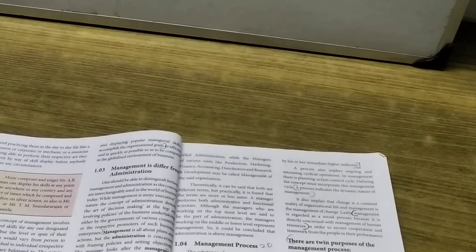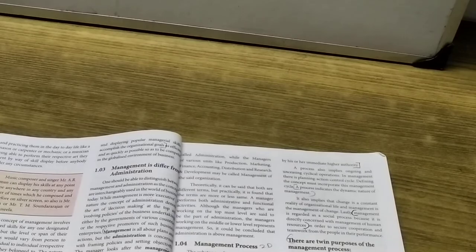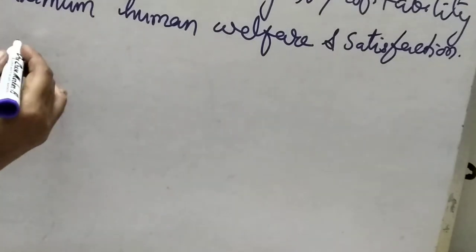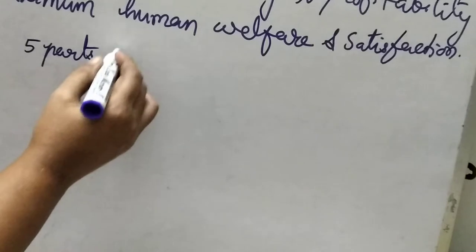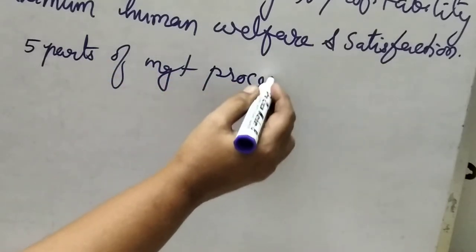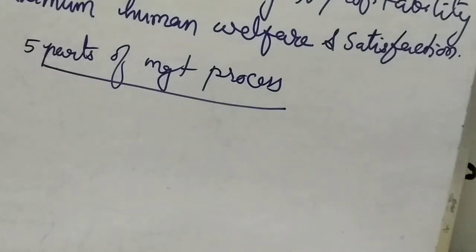Now you can see there are five parts of the management process. Five parts. Let's see each one in detail.